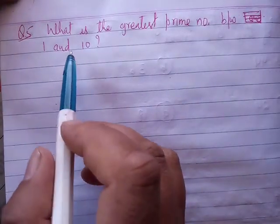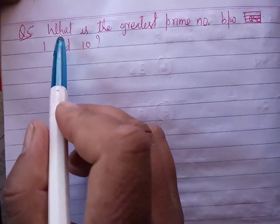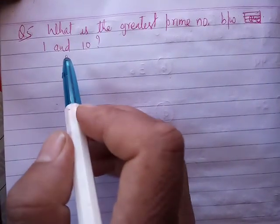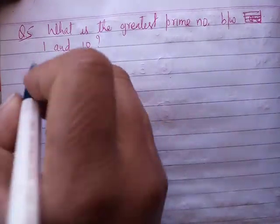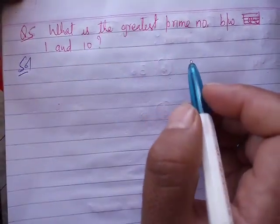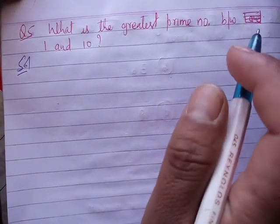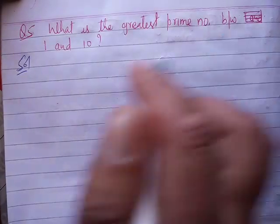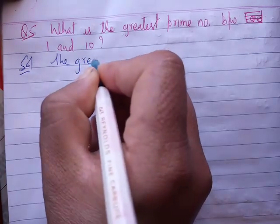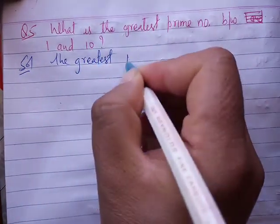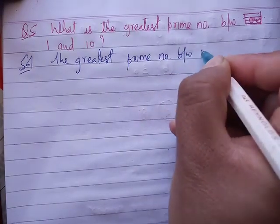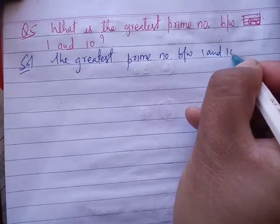Question number five and twenty: What is the greatest prime number between one and ten? The prime numbers between one and ten are two, three, five, and seven. The greatest prime number between one and ten is seven.